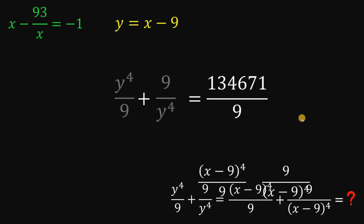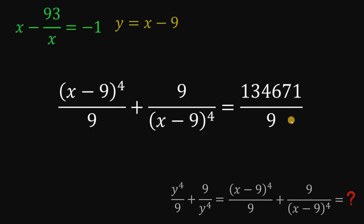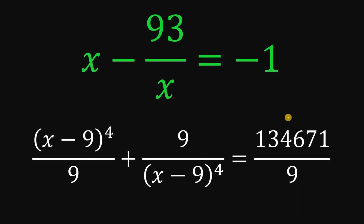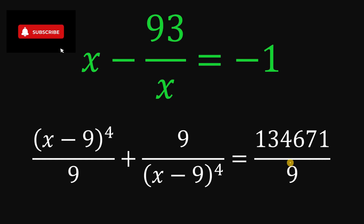Therefore, our answer to this question: given x minus 93 over x equals negative 1, the numerical value of x minus 9 raised to the fourth power over 9, plus 9 over x minus 9 raised to the fourth power, is simply 134,671 over 9. And that is our answer. We are done.